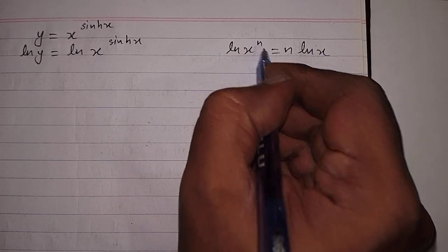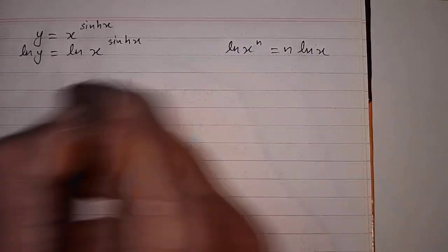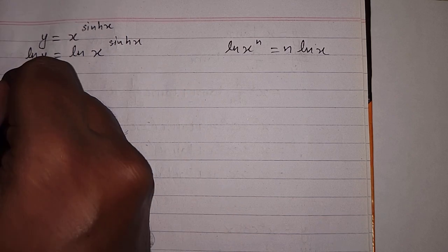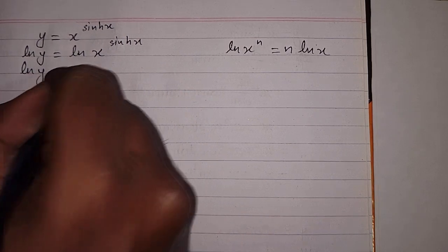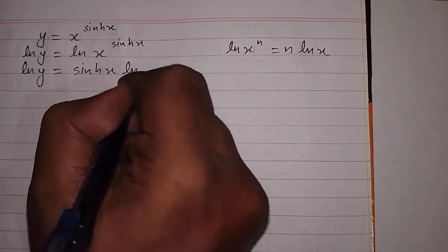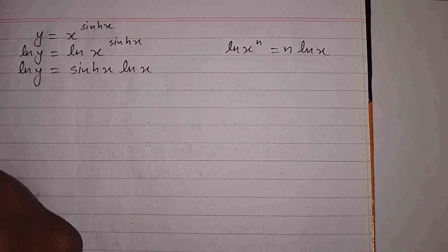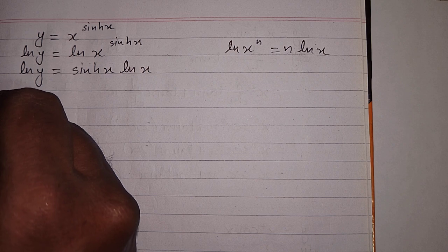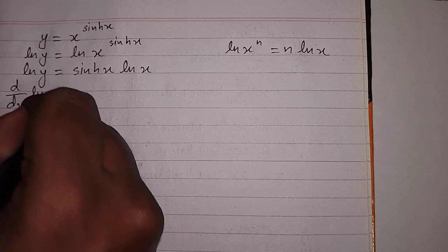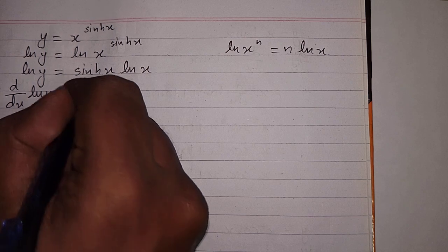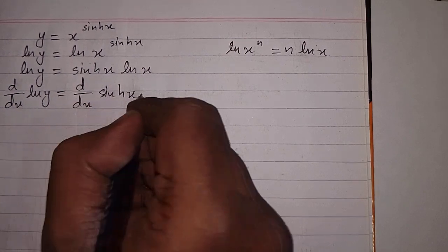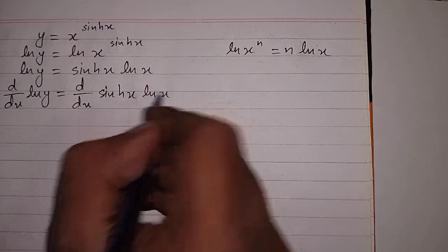So the power of x can be written before the ln. Here the power of x is hyperbolic sin x, so we can write hyperbolic sin x multiplied by ln x. Now we can differentiate both sides with respect to x, giving d/dx of ln y equals d/dx of hyperbolic sin x multiplied by ln x.